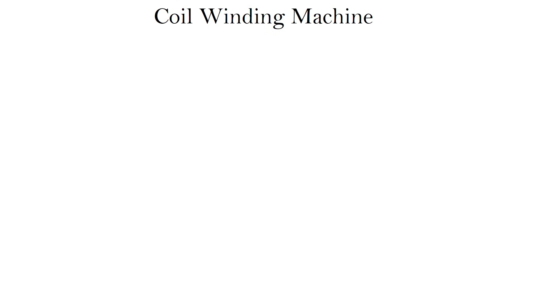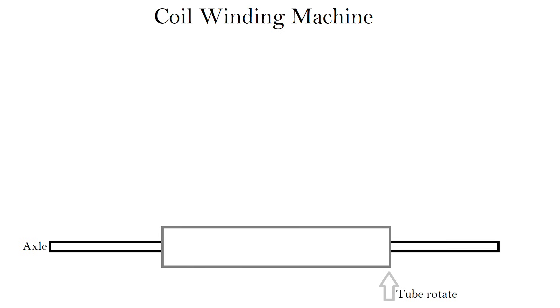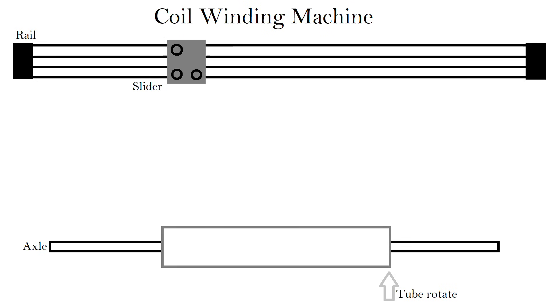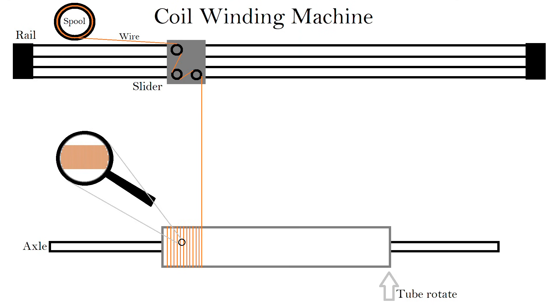In principle, the function of a coil winding machine is quite simple. We have a tube onto which the coil is to be wound. The tube rotates. Parallel to the tube is a rail with a slider that guides the wire. The coil is wound by the rotation of the tube. However, we want to have all windings perfectly next to each other. Therefore, the slider moves a little bit to the side after each rotation. Logically, the movement should be as large as the diameter of the wire. So that sounds quite simple. That is the theory. Now I will show you how I put it into practice.